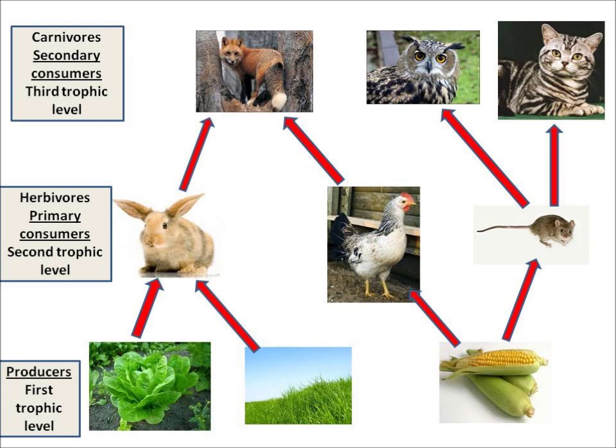There's a term you need to know: interdependence, which is the dynamic relationship between all living things. My food web shows interdependence — the rabbit depends on eating the grass, and the fox depends on eating the rabbit.